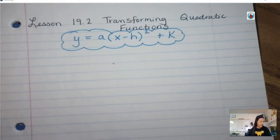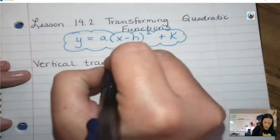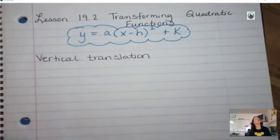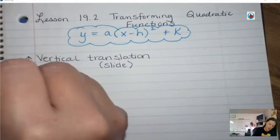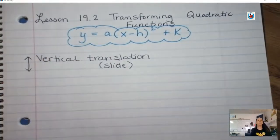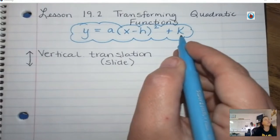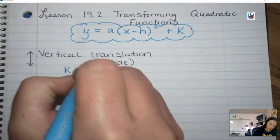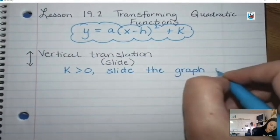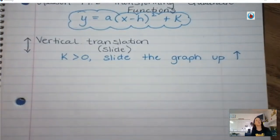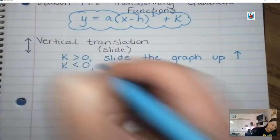The first thing we can figure out is if there is a vertical translation. Translation means slide, and the vertical is up and down. So I can tell if the graph is going to be moved up or down. The way I can determine that is the K value. If K is greater than 0, you're going to slide the graph up that many units — so if it says plus 3, you move the graph 3 up. If that K value says minus something, so it's less than 0, you'll slide the graph down.